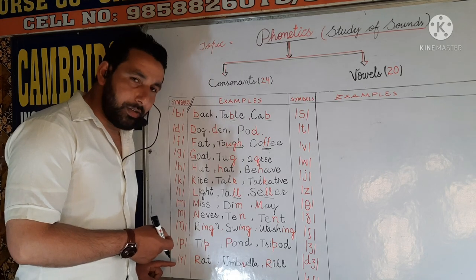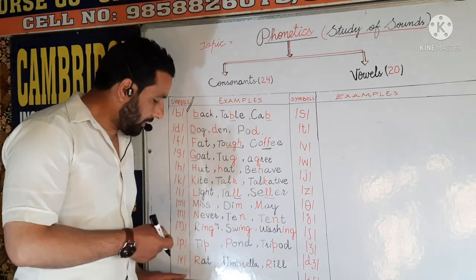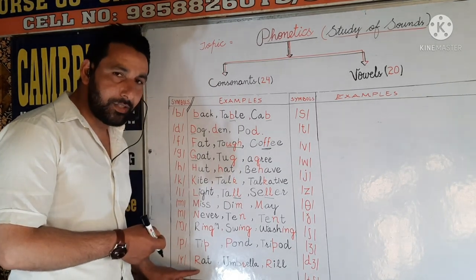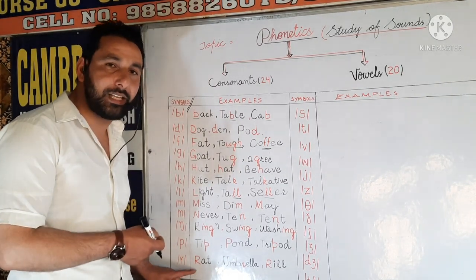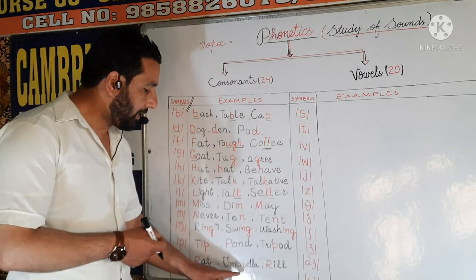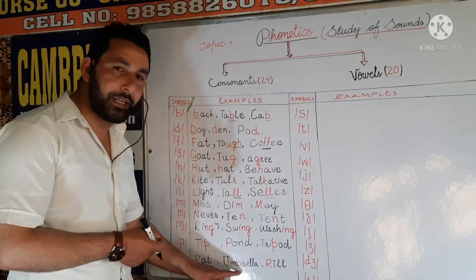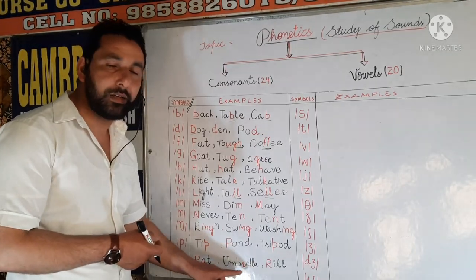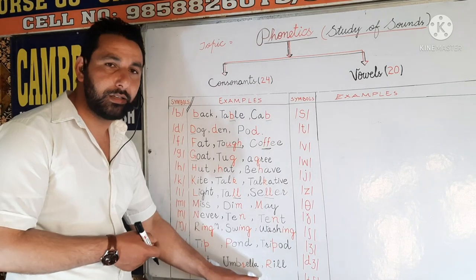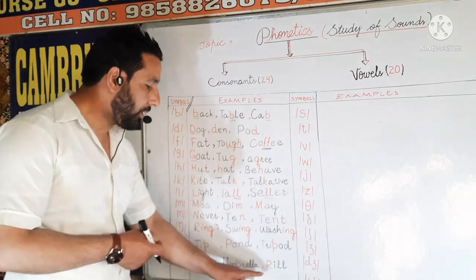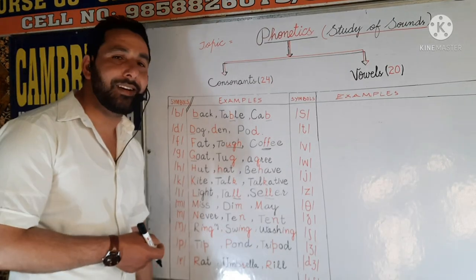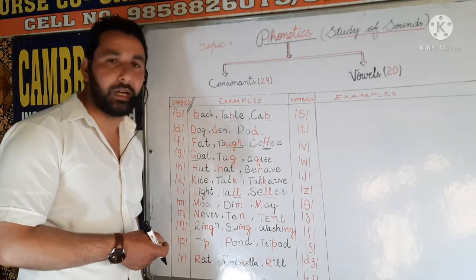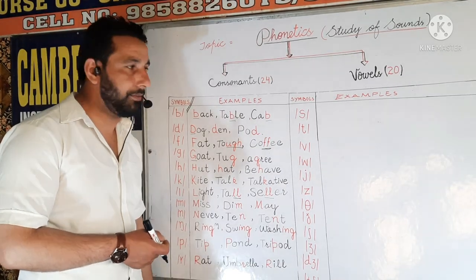Next is R. In case of 'rat', we start with sound R. In case of 'umbrella', we again start with sound R.